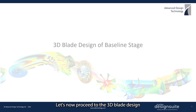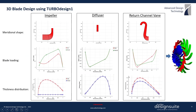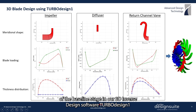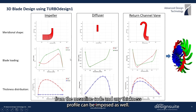Let's now proceed to the 3D blade design for the various components of the baseline stage. These are the setups for the impeller, diffuser vane, and the return channel vane of the baseline stage in our 3D inverse design software, TurboDesign1, where the meridional shape and blade loading automatically comes from the meanline code, and any thickness profile can be imposed as well.